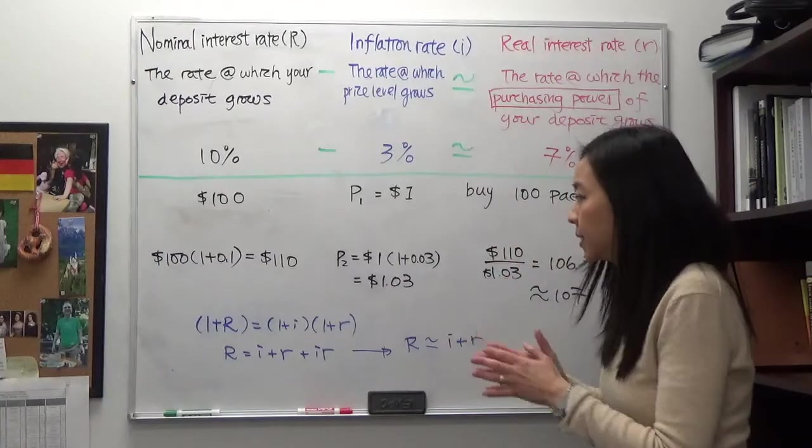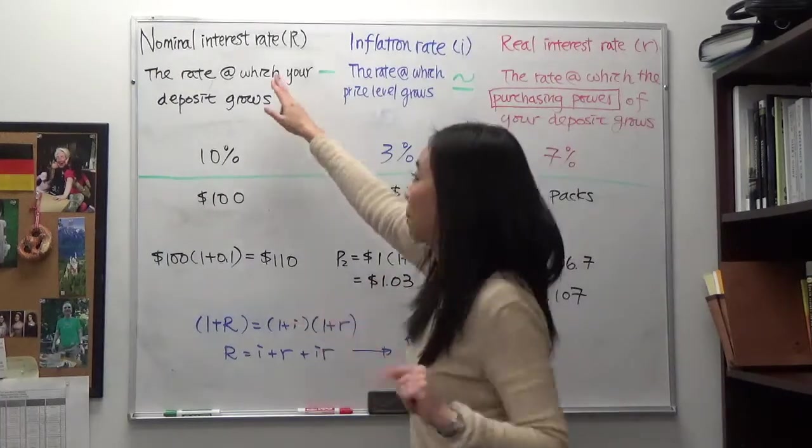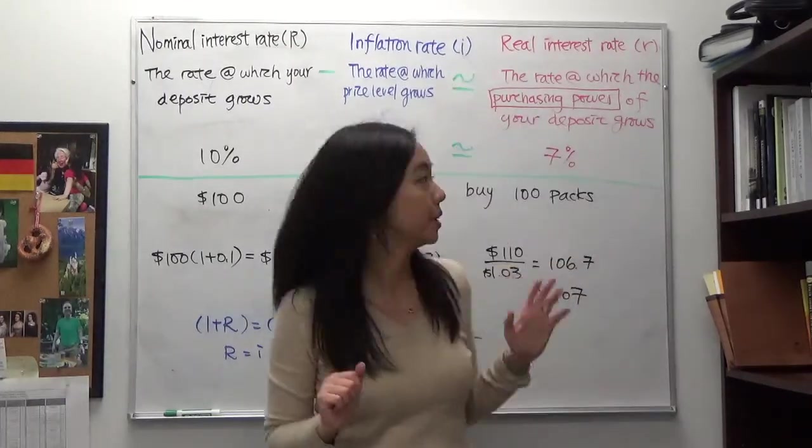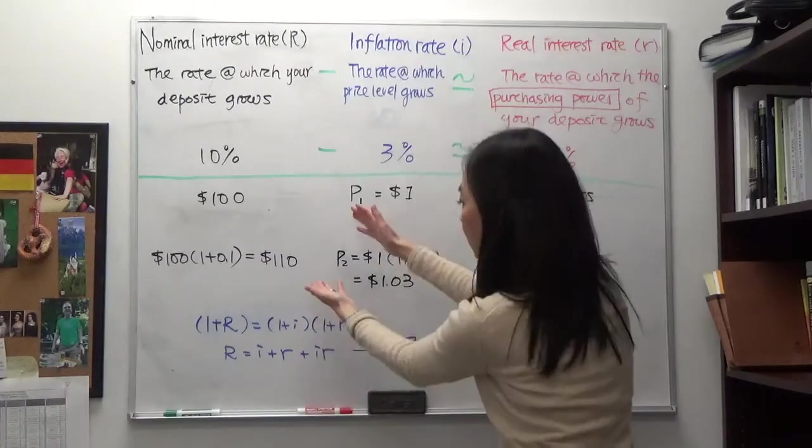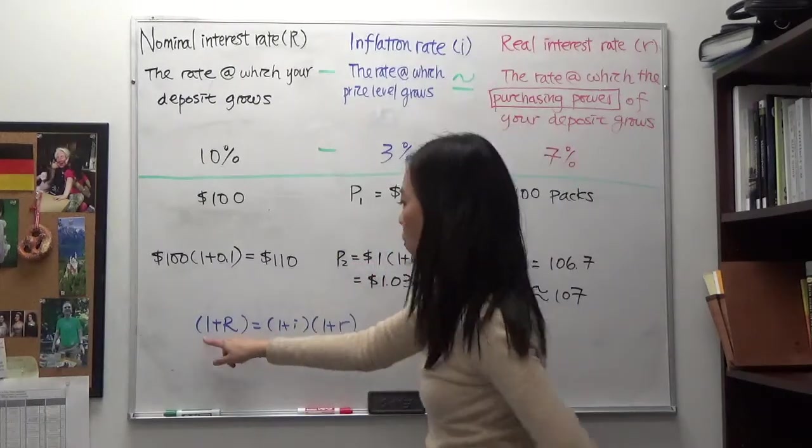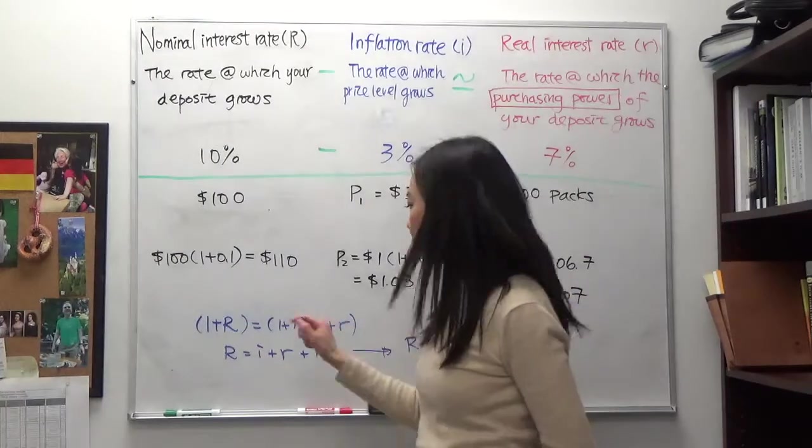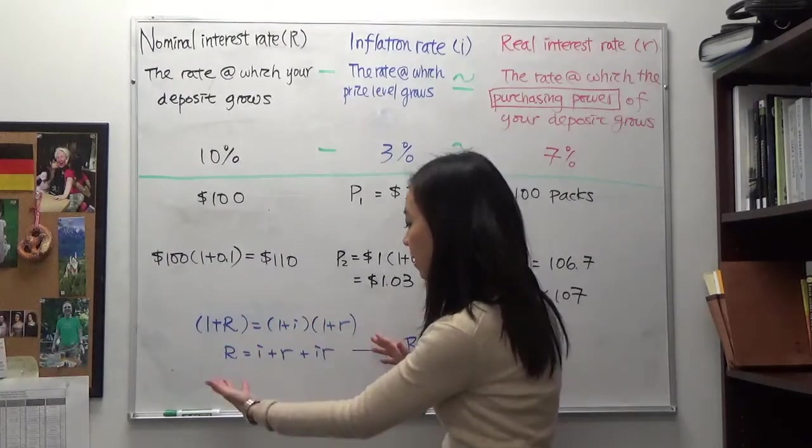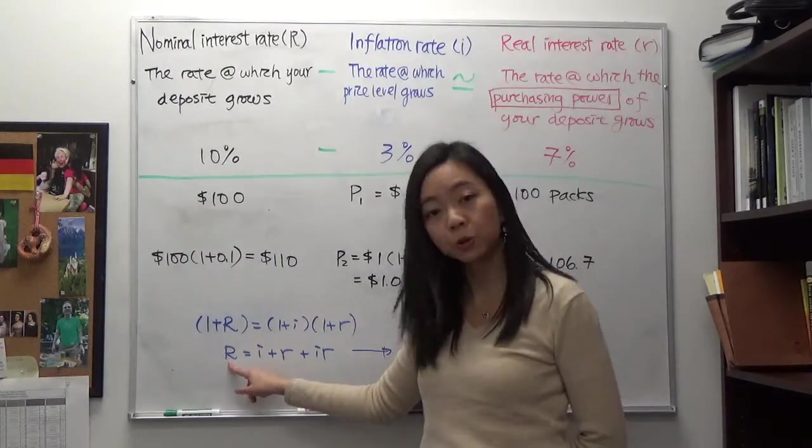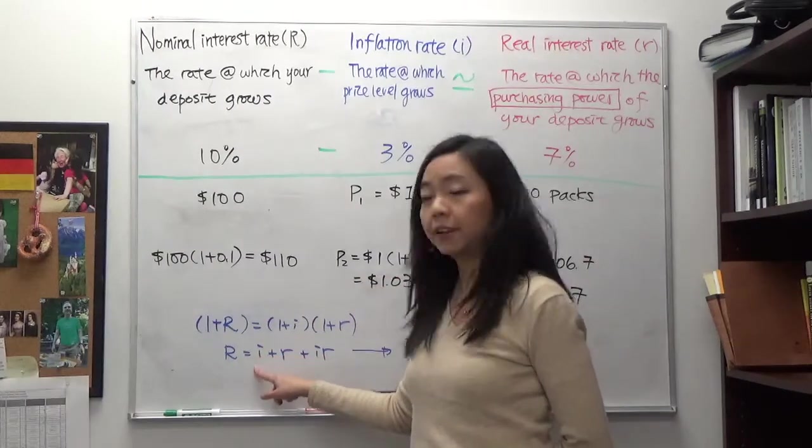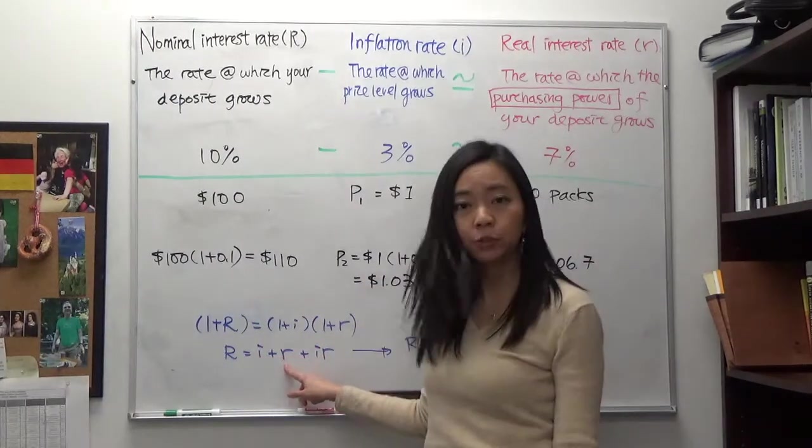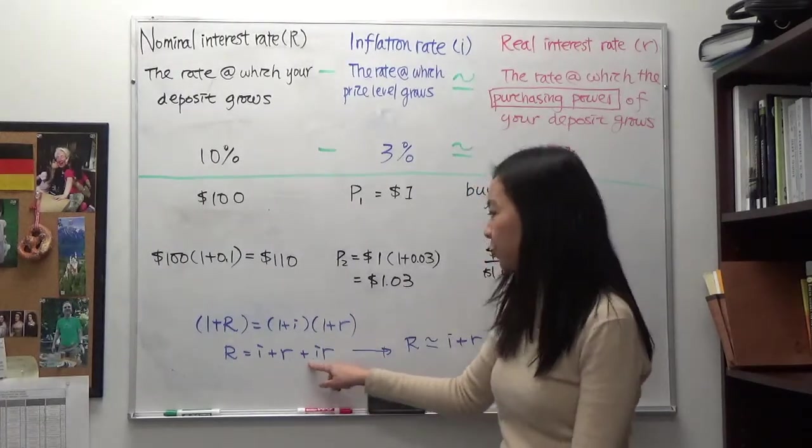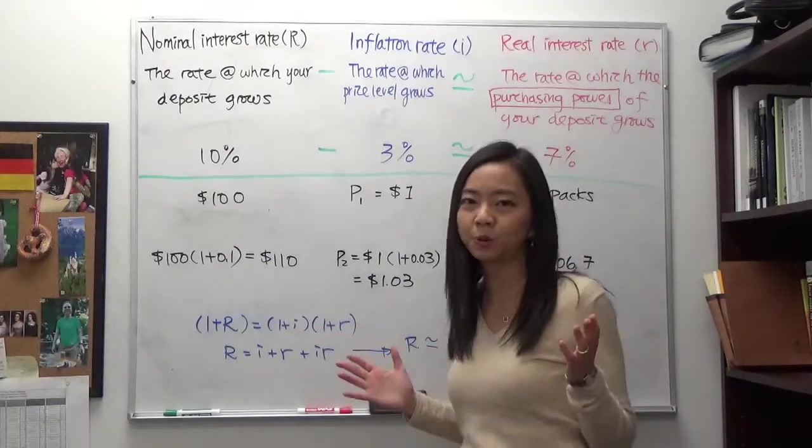Here's the reason. I'm going to call nominal interest rate as the large R and inflation rate as I, real interest rate as a small r. What I've been doing here is that you can see 1 plus nominal interest rate is actually equal to 1 plus inflation rate times 1 plus real interest rate. And after you expand it you will see that nominal interest rate is actually equal to inflation rate plus real interest rate plus inflation rate times real interest rate. And because this term is so tiny we just kind of cross it out because it's so small we can ignore it. And we say nominal interest rate is approximately equal to inflation rate plus real interest rate.